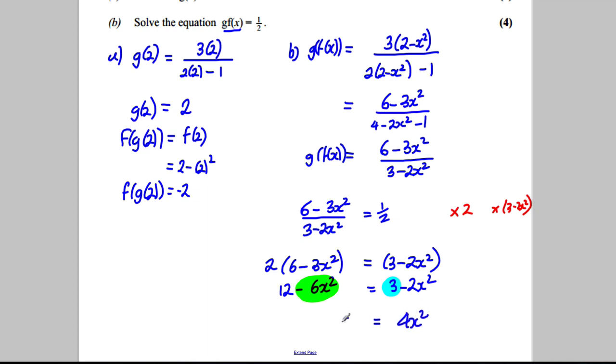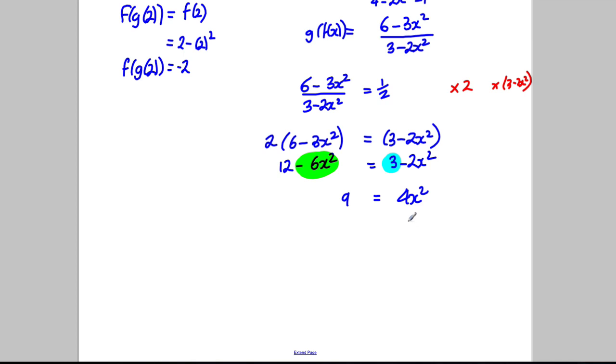Divide both sides by the 4, so I'd have x squared equals 9 divided by 4. Then take square roots—I would get x equals positive or negative, square rooted, which would be 3 over 2.